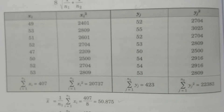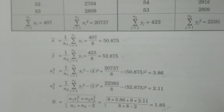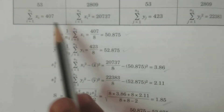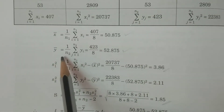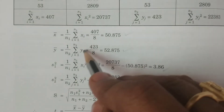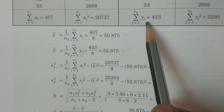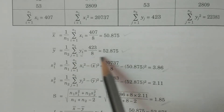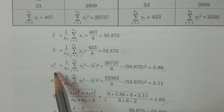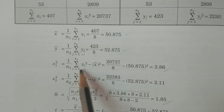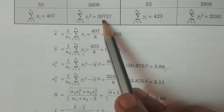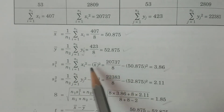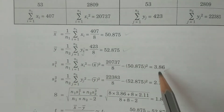All summations are calculated. X-bar equals (1/N1) times summation of Xi, which is 407 divided by N1=8, giving X-bar = 50.875. Y-bar equals (1/N2) times summation of Yj, which is 423 divided by N2=8, giving Y-bar = 52.875. S1-squared equals (1/N1)(summation Xi²) minus X-bar², giving S1² = (20737/8) minus 50.875² = 3.86. S2-squared equals (1/N2)(summation Yj²) minus Y-bar², giving S2² = (22383/8) minus 52.875² = 2.11.